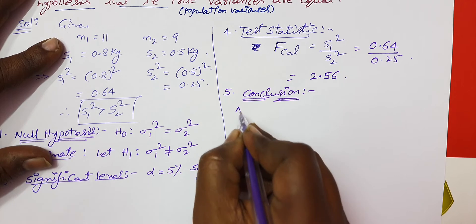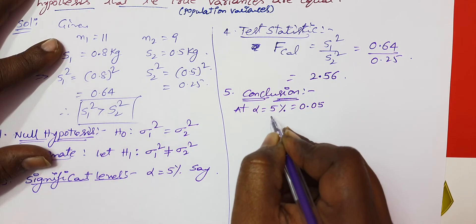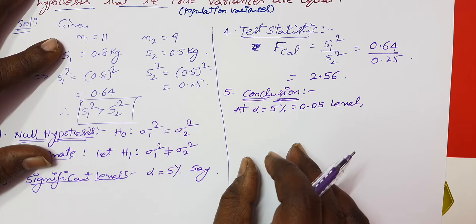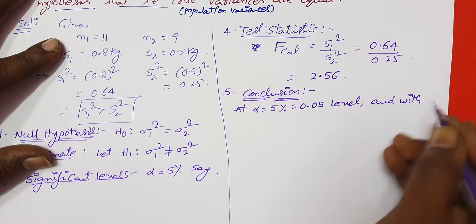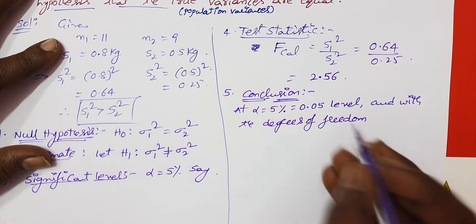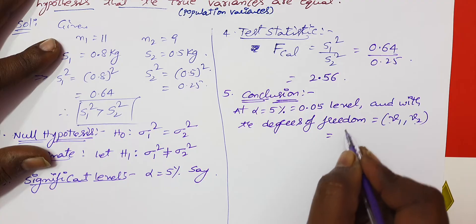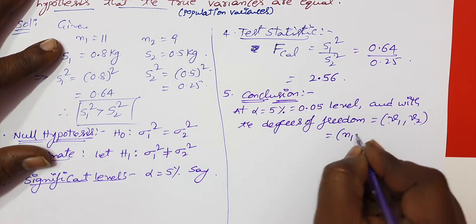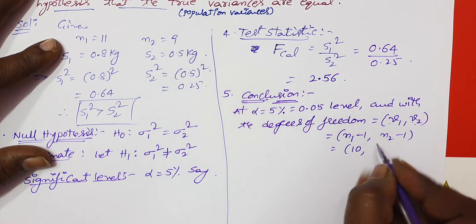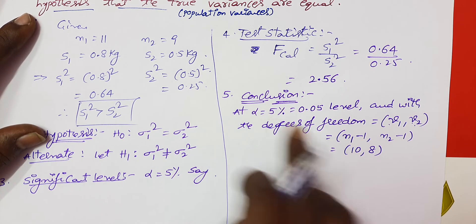With the degrees of freedom for the F-test: nu1 is the first sample size minus 1, and nu2 is the second sample size minus 1. So nu1 equals 11 minus 1 equals 10, and nu2 equals 9 minus 1 equals 8. The degrees of freedom are (10, 8). We use these with the F distribution table at the given significance level.